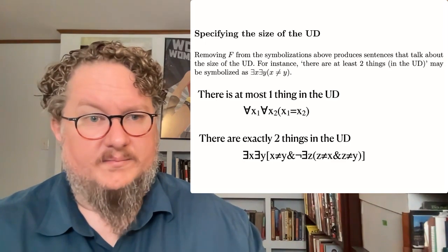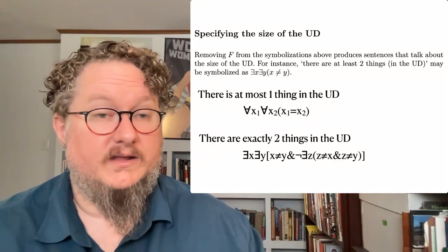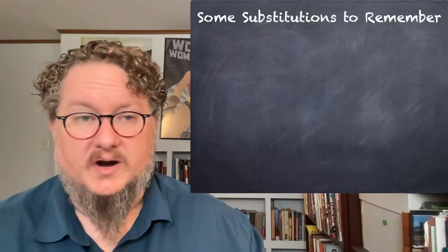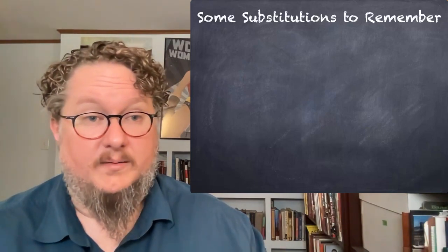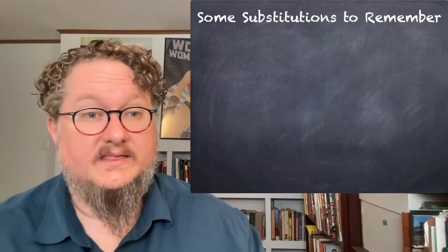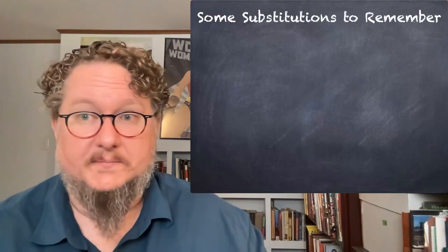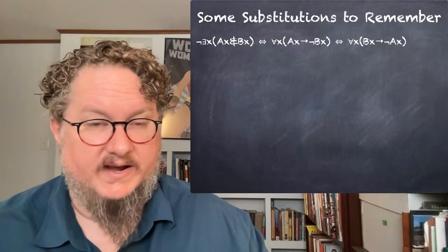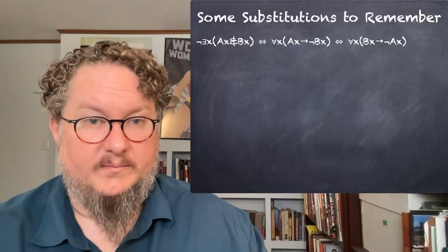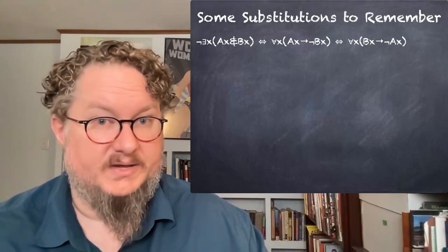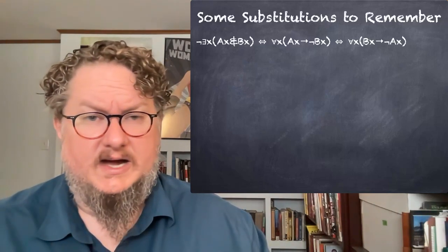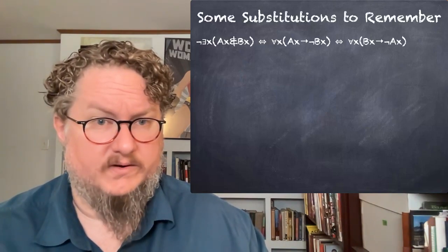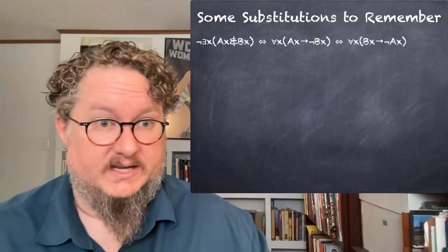I also want to point out some equivalencies you can substitute in QL — this will become more useful when we do proofs, but it's helpful to think about now for translation between QL and English. Negating the existential quantifier applied to a conjunction — saying it is not the case that some A's are B's, or 'no A is B' — is equivalent to: for all X, if AX then not BX, or BX then not AX. All of those are equivalent ways of saying there's nothing that is both A and B.